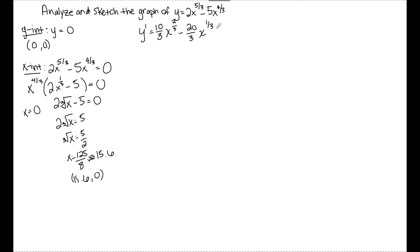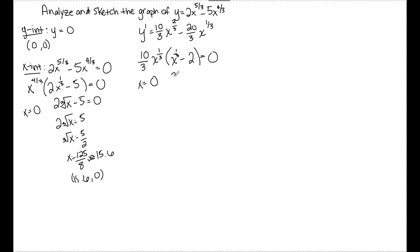In this function, there are no places where the first derivative is undefined, so I only need to find where y prime equals 0. Setting it equal to 0, I factor out a GCF of 10/3 and also the smaller exponent x to the 1/3. Inside the parentheses, I need x to the 1/3 to recover the first term, minus 2 for the second. The first factor gives x equals 0. The second factor gives the cube root of x equals 2, so cubing both sides gives x equals 8. These are my two critical values for the y prime number line.